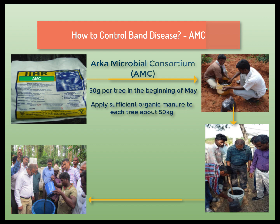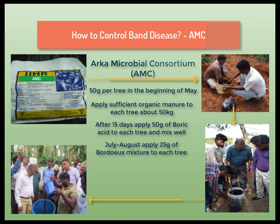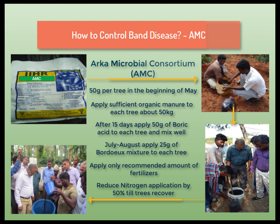Apply sufficient organic manures to each tree, about 50 kg. After 15 days, apply 50 grams of boric acid to each tree and mix well with the soil. During July to August, apply about 25 grams of Bordeaux mixture to each tree. Apply recommended amounts of fertilizers, not more or less, but reduce nitrogen application by 50% until trees recover.